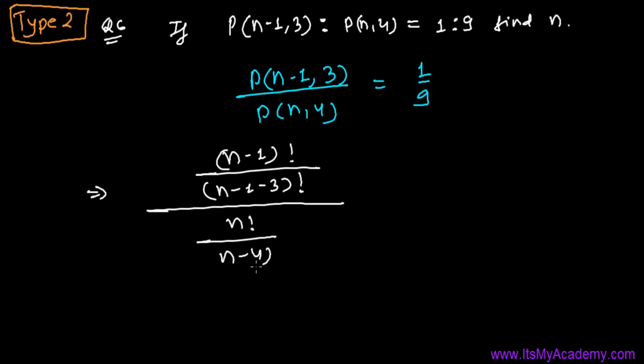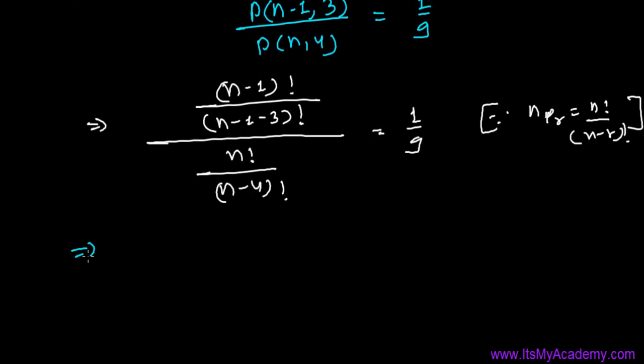The formula I've used here is nPr, which is n! divided by (n-r)!. So you can see here we have (n-1)! divided by (n-4)!. Let me first write (n-1)! divided by (n-4)! and these things go up, so this will be (n-4)! divided by n!, and that equals 1 by 9.